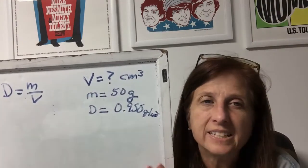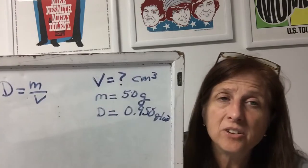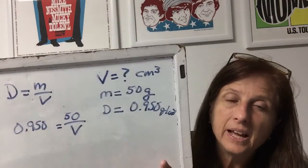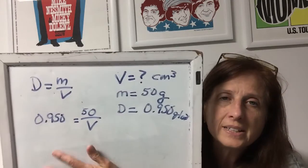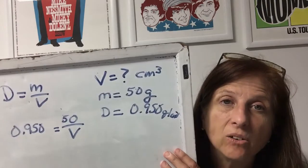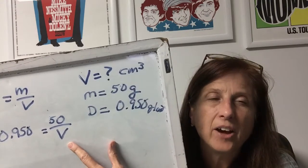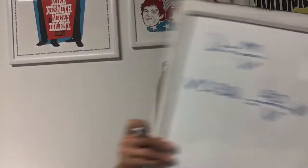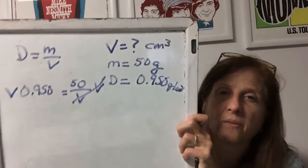We've got our knowns and unknowns, got rid of all those unnecessary words like cough syrup, and now we sing a song — Substitute! That reminds us to substitute into the formula. So where D is, I write 0.950; where M is, I write 50; and V is what I don't know, so I'll leave it as a letter. Now, volume is in the denominator and we want to get it out. The opposite of dividing is multiplying — multiply both sides by V, and the V's cancel out.